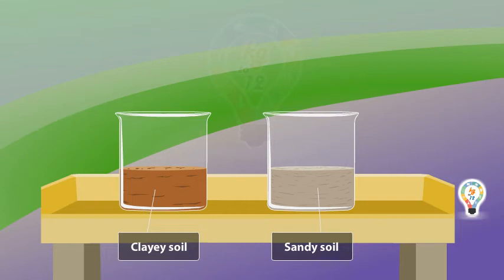Sandy soil contains soil particles that are large and loosely packed. This creates air spaces between them. The water seeps into it much faster than the other soil types.